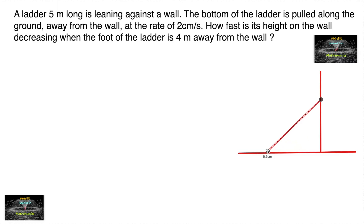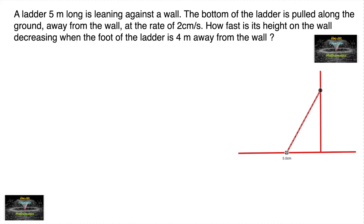If you pull the ladder away from the wall, automatically there is a decrease in the ladder's position, meaning the height on the wall decreases. Let Y meters be the height of the wall where the ladder touches, and let the foot of the ladder be placed X meters away from the wall. The bottom of the ladder is pulled along the ground away from the wall at the rate of 2 cm per second.